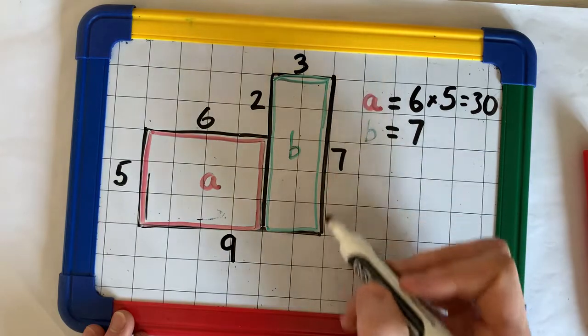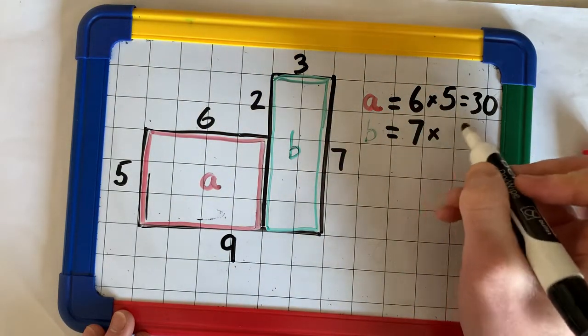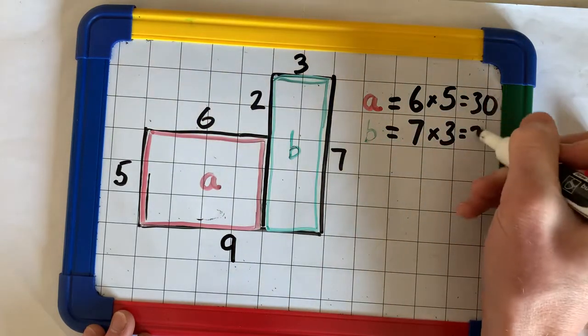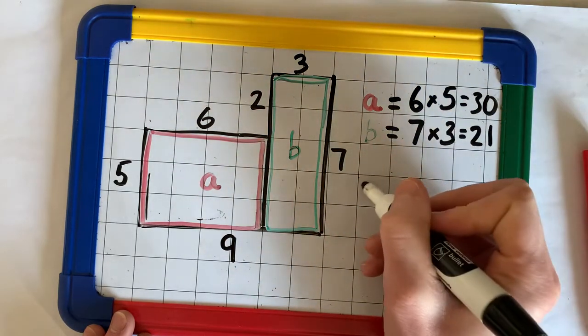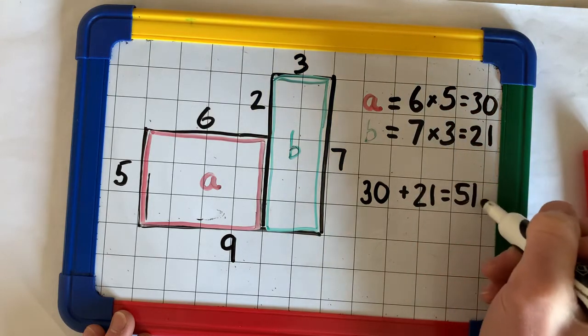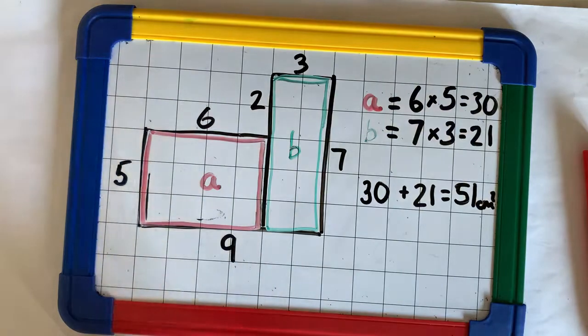So, we've got our width now for B, as well as our length. 7 times 3 makes 21. So, our whole area is 30 add 21, which equals 51 centimetres squared, if we're assuming that all of these lengths are centimetres.